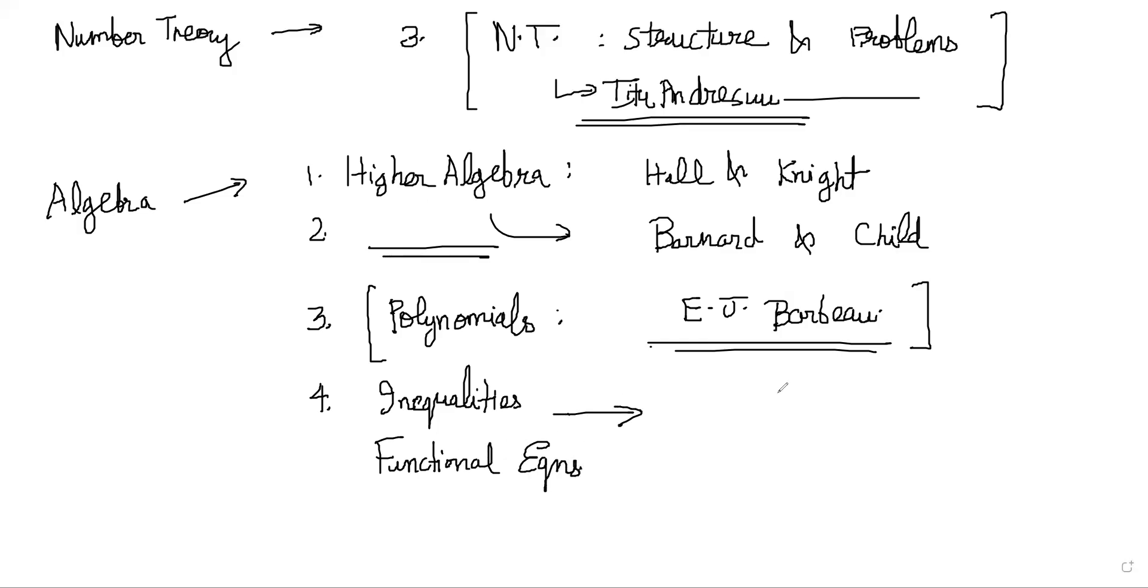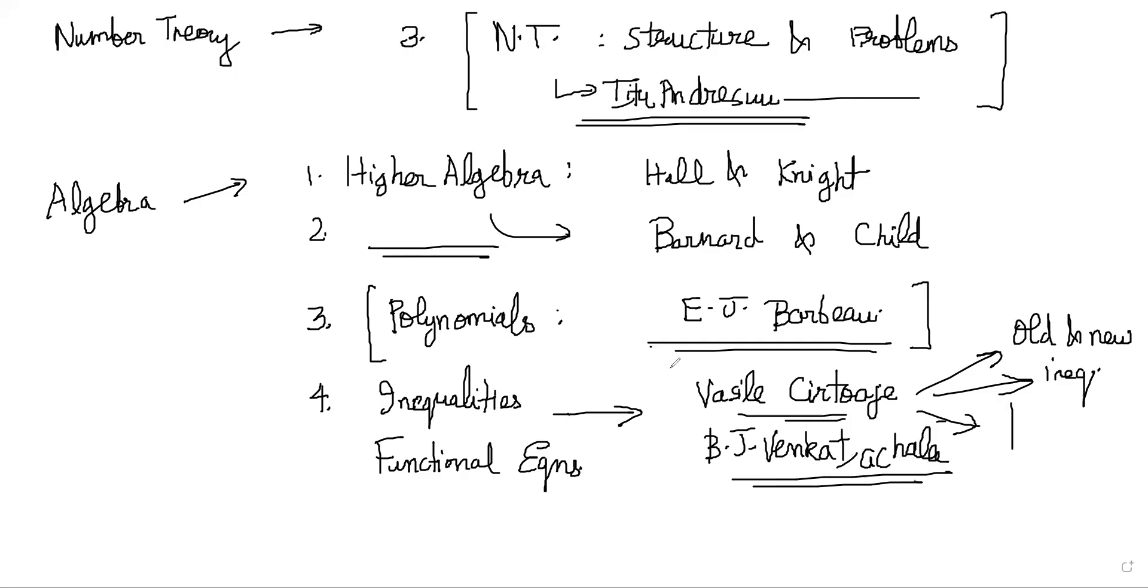Also, apart from that, for Algebra, there are some special portions where you might need like inequalities and functional equations. These portions you might need separate books. So for inequalities, there are many books, but Vasile Cîrtoaje has several books on inequalities. There is one book called Old and New Inequalities, which is written by this guy plus Titu Andreescu. That is very nice. There are many other books here. You can also follow B.J. Venkatachala's inequality book. That is also good. For functional equations, you can follow B.J. Venkatachala's functional equation book. You can also go through Christopher Small's functional equation book. So these are special topics for which you need some reference material.